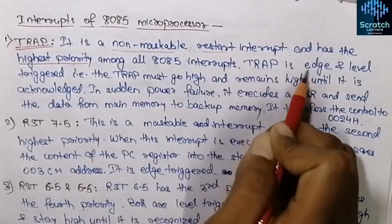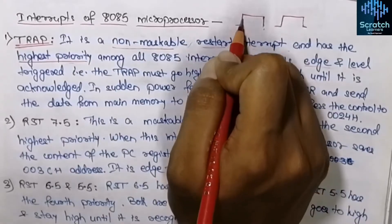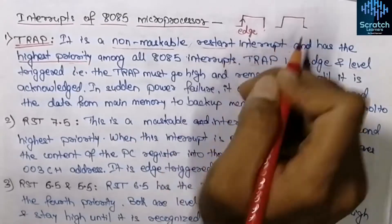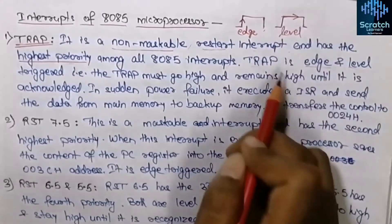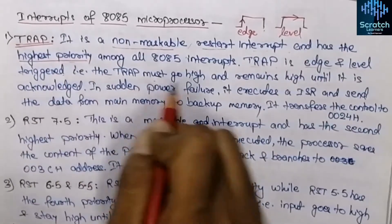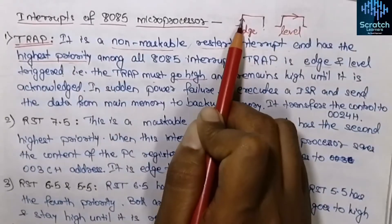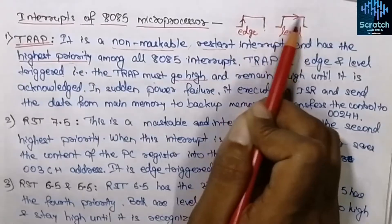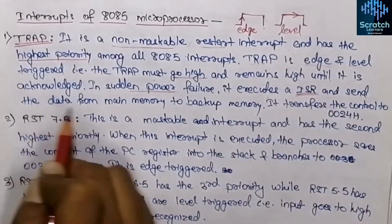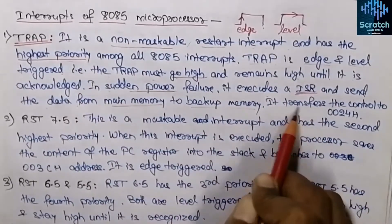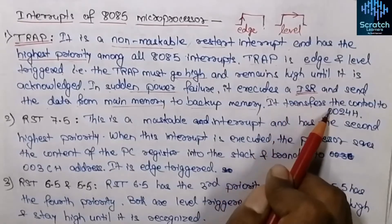TRAP is both edge and level triggered. In edge triggering, the signal transitions trigger the interrupt; in level triggering, the signal must be at a certain level. Since TRAP is both edge and level triggered, the TRAP signal must go high and remain high until it is acknowledged. In case of sudden power failure, it executes an ISR and sends the data from main memory to backup memory, and it transfers control to address 0024H.